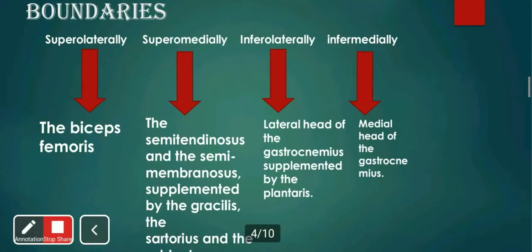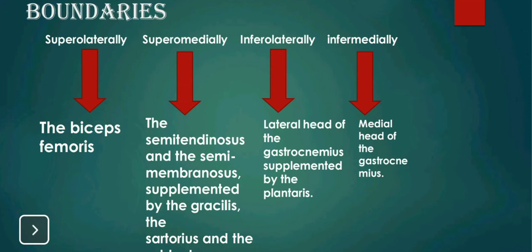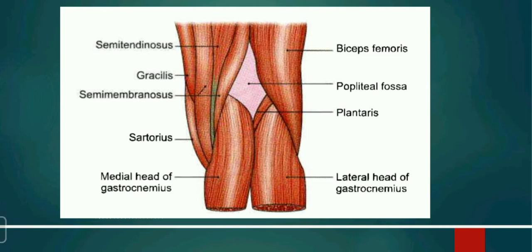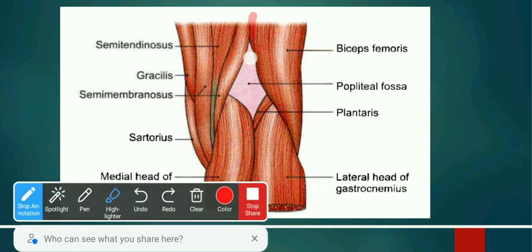Now moving forward with the boundaries. There are four boundaries: superolaterally, superomedially, inferolaterally, and inferomedially. Superolateral means the upper side and lateral — away from the body, sidewards. Superomedial means upper side and medial, towards the midline of the body. So the popliteal fossa is divided into these four boundaries.